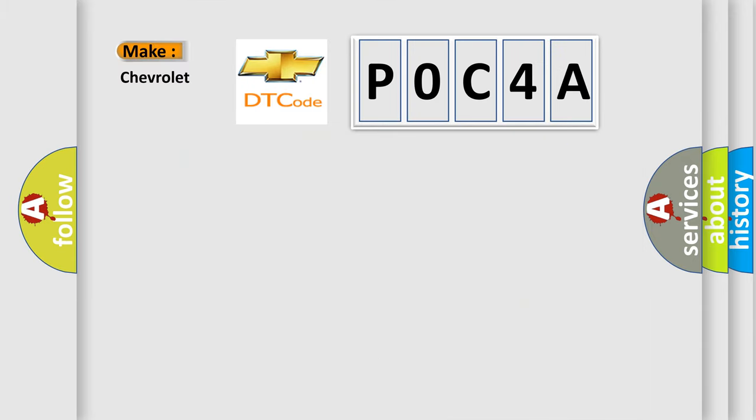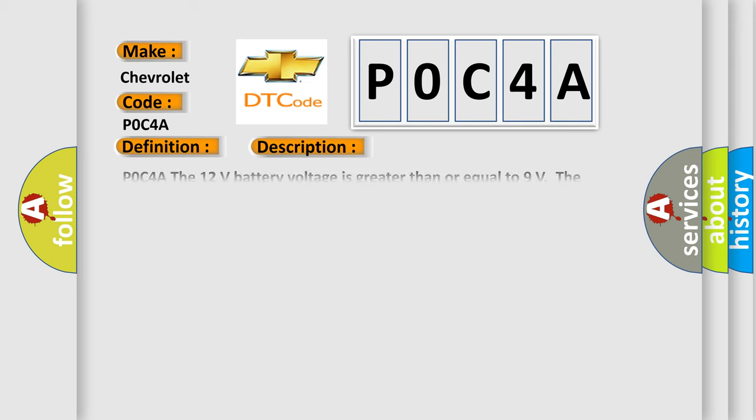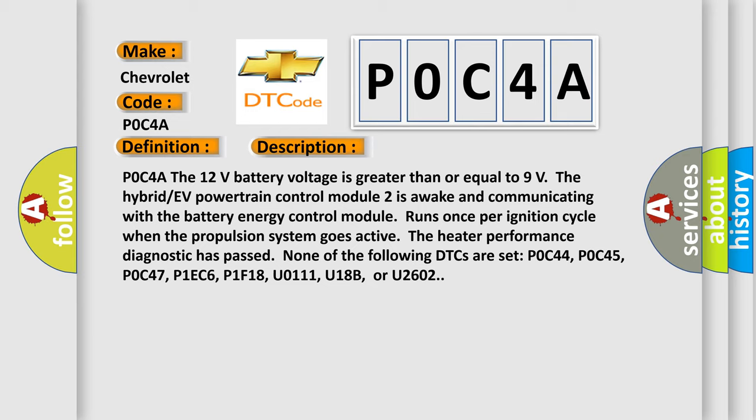So, what does the diagnostic trouble code P0C4A interpret specifically for Chevrolet car manufacturers? The basic definition is: hybrid or EV battery pack coolant pump performance. P0C4A runs when the 12-volt battery voltage is greater than or equal to 9 volts, the hybrid/EV powertrain control module 2 is awake and communicating with the battery energy control module, runs once per hour per ignition cycle when the propulsion system goes active, and the heater performance diagnostic has passed. None of the following DTCs are set: P0C44, P0C45, P0C47, P1EC6, P1F18, U0111, U18B, or U2602.